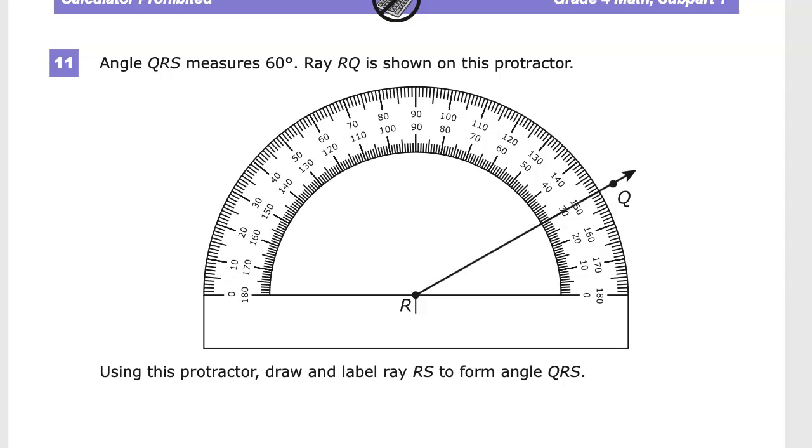This is the grade 4 math practice test for TN Ready. Question on this version, number 11. Angle QRS measures 60 degrees. Ray RQ is shown on the protractor, so we already have some values here that we can work with. Using the protractor, draw and label Ray RS.